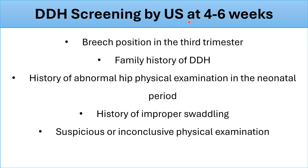DDH screening by ultrasound at four to six weeks: if breech position in the third trimester is a risk factor but the exam is normal, order a pelvis ultrasound at four weeks of age — ordering earlier may give false positive results. Similarly, family history of DDH, abnormal hip physical examination history in the neonatal period, history of improper swaddling, or suspicious/inconclusive physical examination are all indications to order ultrasound at four weeks.